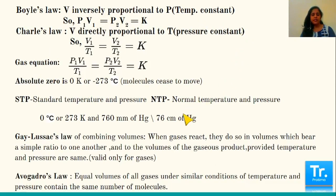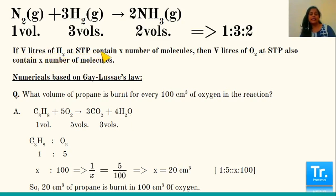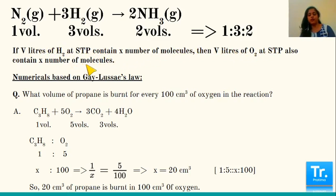When gases react they do so in volumes which bear a simple ratio, including to the volume of the gaseous product. To illustrate Avogadro's law: if V liters of hydrogen at STP contains X number of molecules, then V liters of oxygen at STP will also contain X number of molecules.